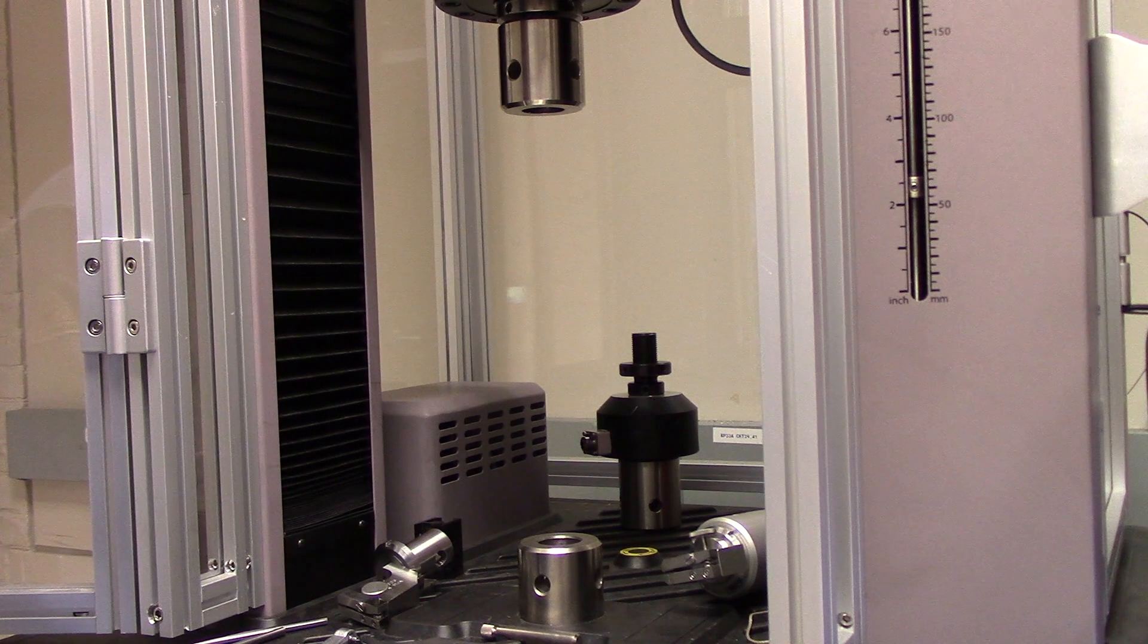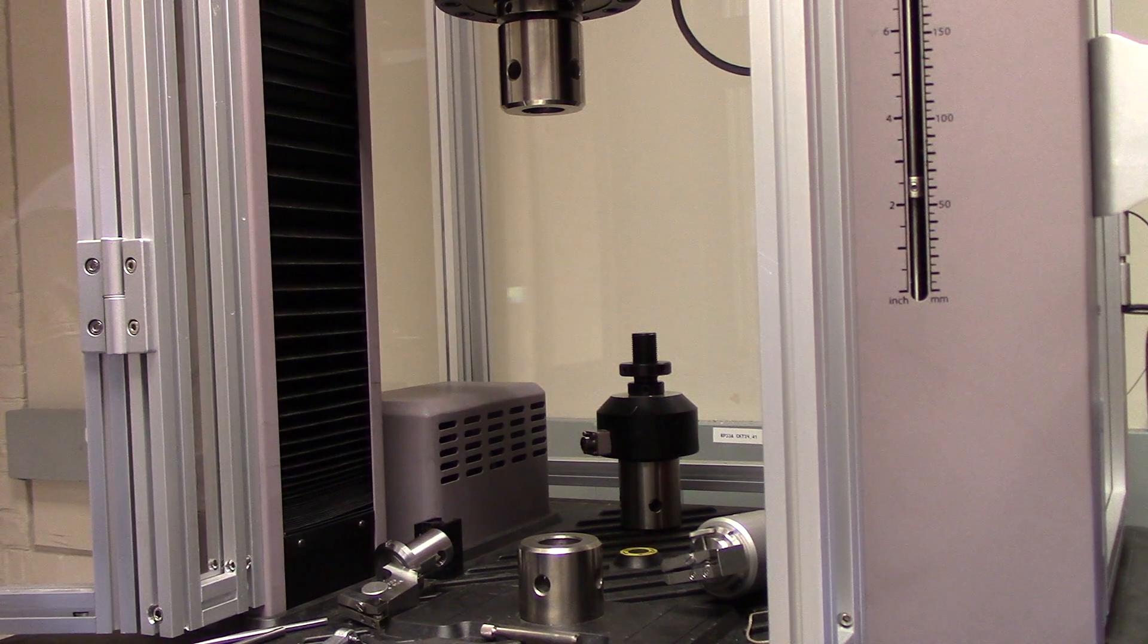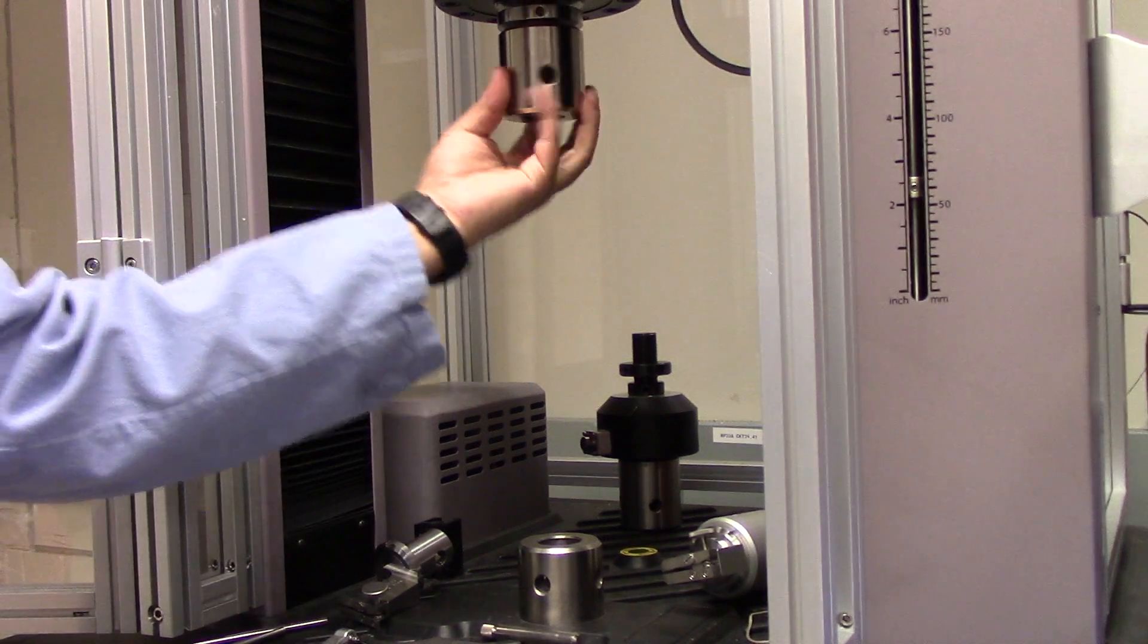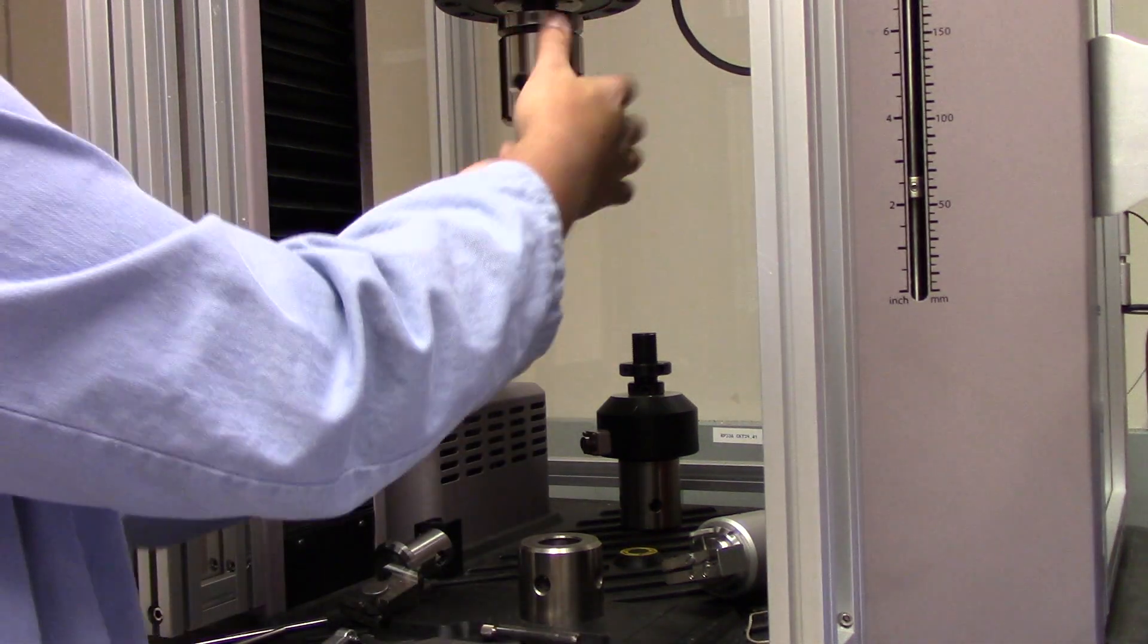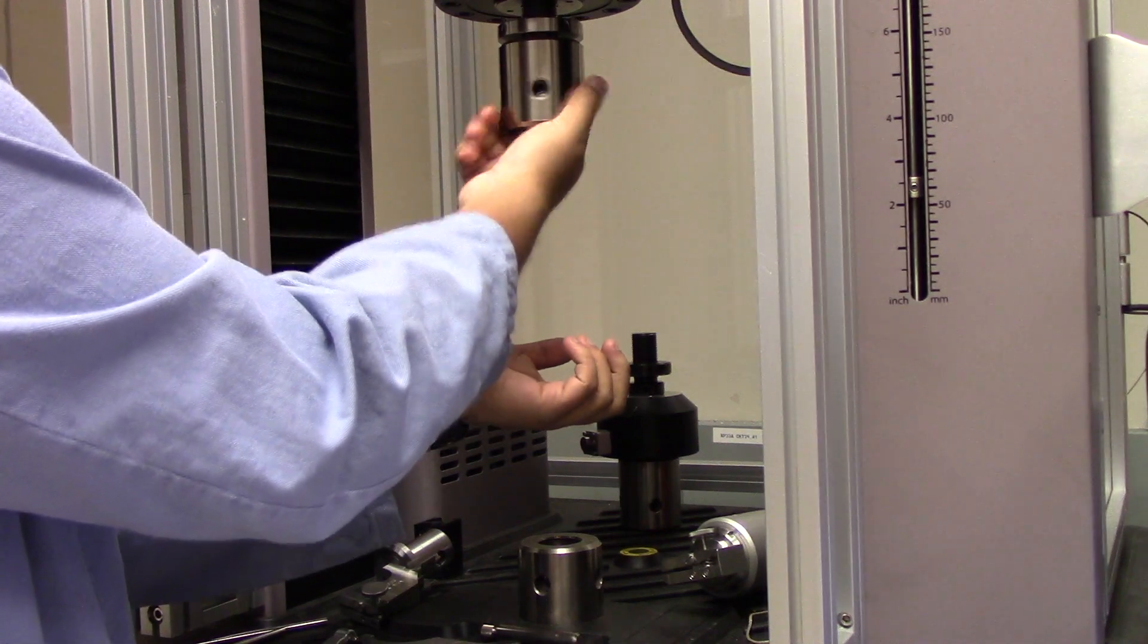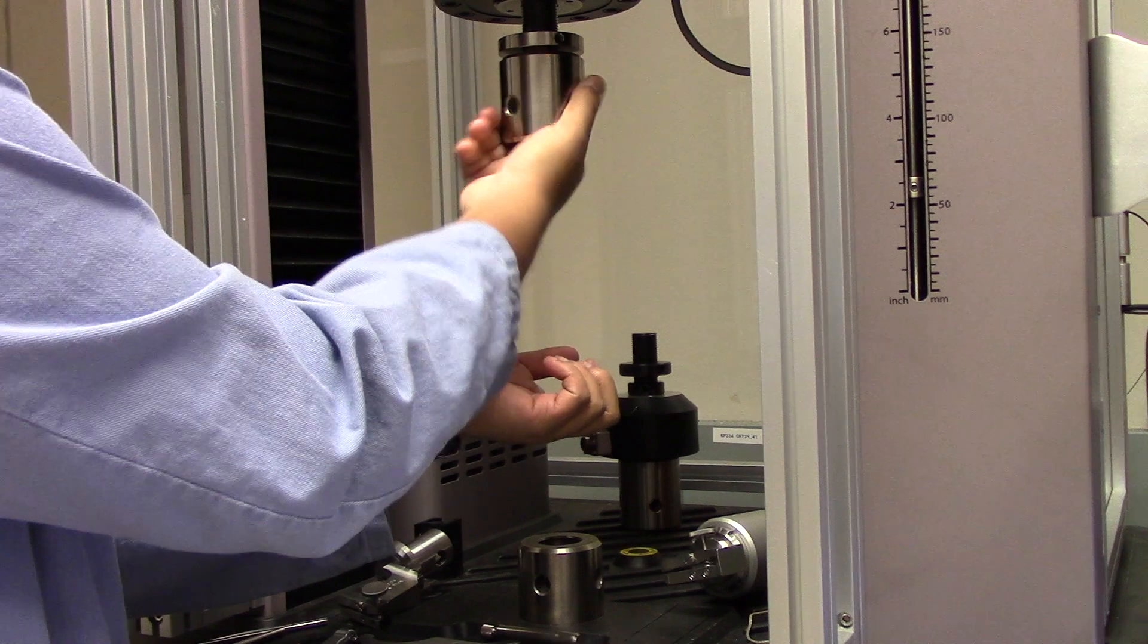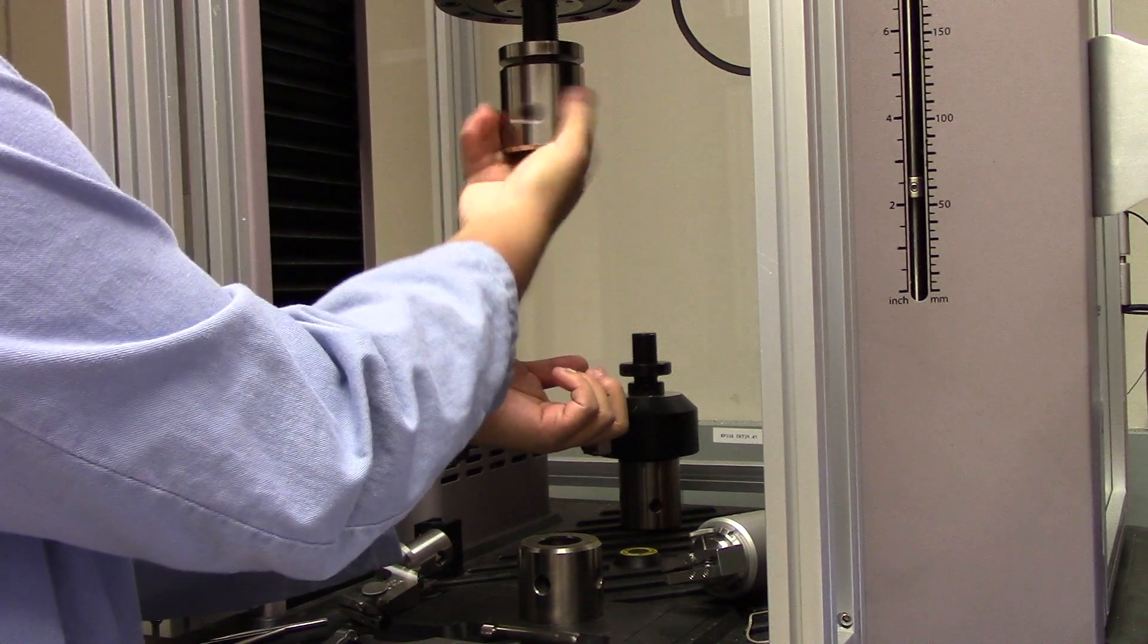First, ensure that there are no additional grips or load cells placed onto your system. If the tensile tester is all clear, then you'll want to start off with removing the receiver from the 50kN load cell by rotating clockwise. This is the area as to which your load cell will directly connect to, much like with high force testing. Just make sure to be careful though, because there is a bit of a drop.